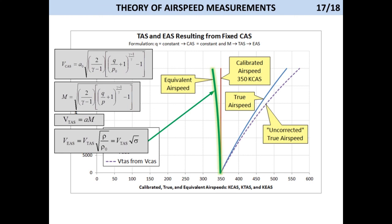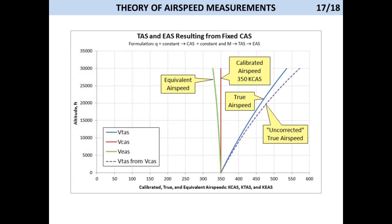This graph shows that the equivalent airspeed, which contains the true magnitude of the aerodynamic forces, indeed reduces with altitude, assuming a fixed calibrated airspeed.